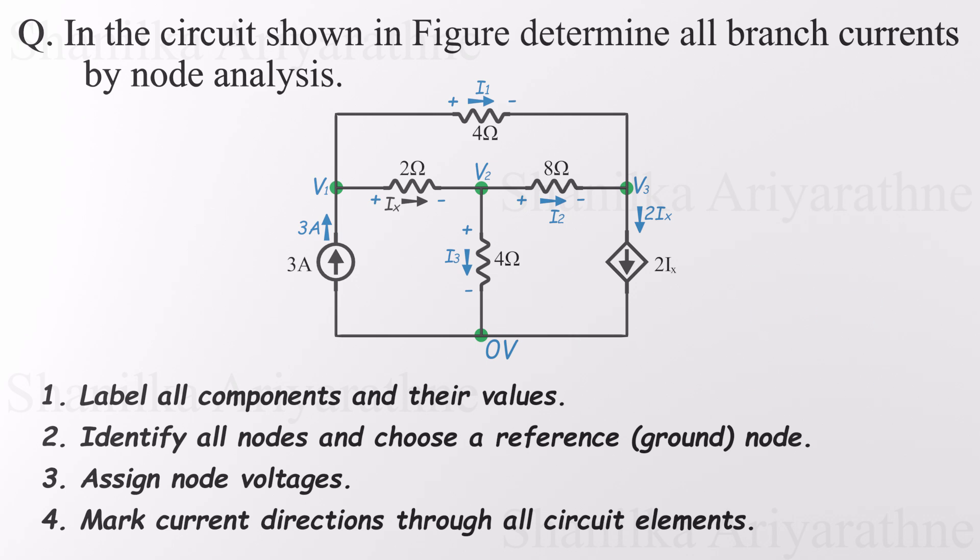Seriously, there's no wrong guess here. If the current actually flows the other way, our answer will just come out negative. That's math's way of nudging us in the right direction. The important thing is consistency. Make sure the voltage polarity across each resistor matches the direction of the current you assumed. That keeps your calculations tidy and avoids mix-ups later. All right, currents and polarities are set. Let's move on.